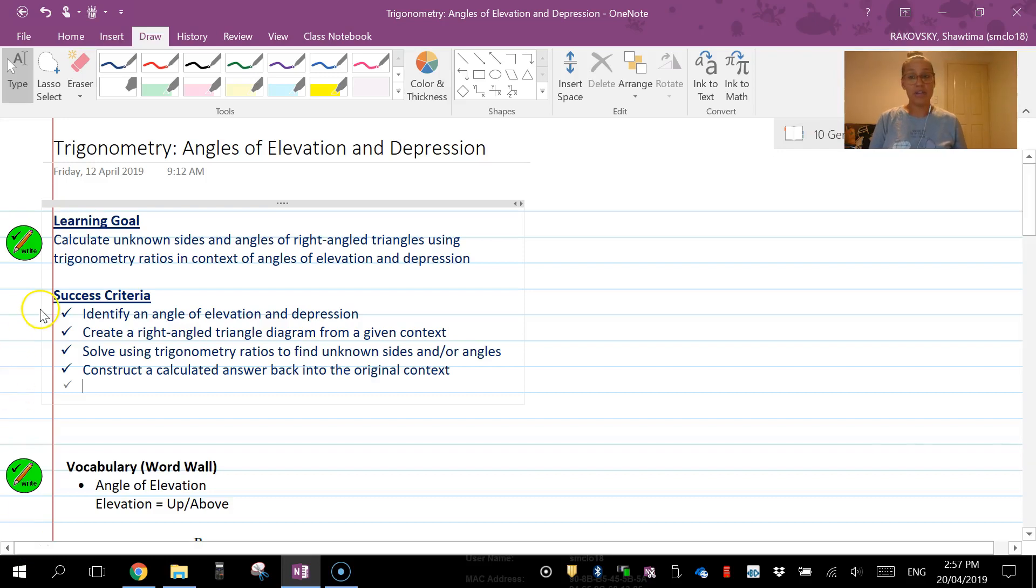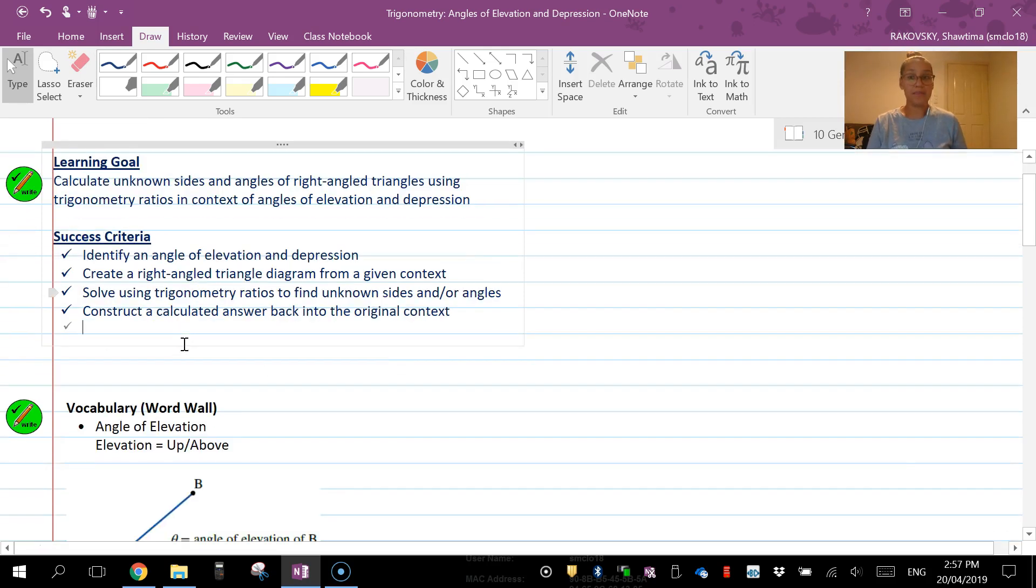Hey everyone, in this video we're looking at an application of trigonometry to angles of elevation and depression. You're still going to be able to calculate unknown sides and angles, however it's going to be in the context of elevation and depression. So identify an elevation or depression question, create your right-hand triangle diagram, use trig and find the answer.